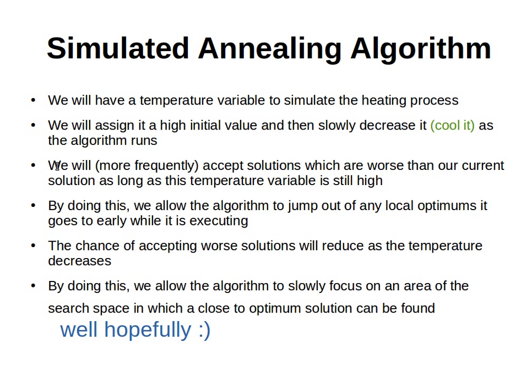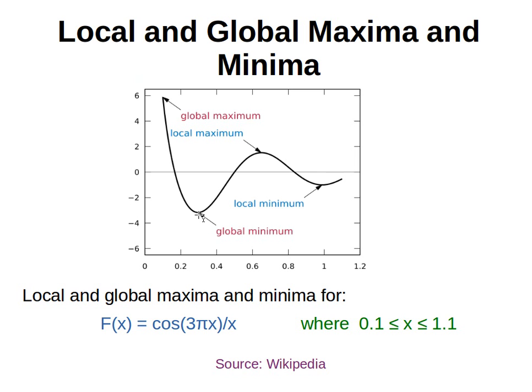When we move from one solution to another we always try to move to a better solution — one that gives us a better value when we evaluate it. For the traveling salesman problem, we always want to move towards a solution that decreases the distance we travel. If the next solution increases the distance, we'd want to avoid that — but if we always do that, we get stuck in local minima.